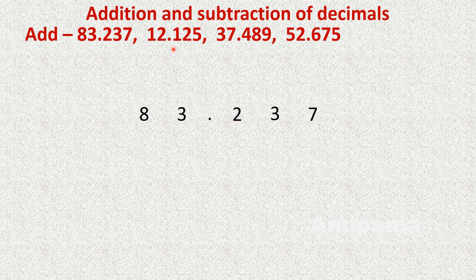We will write each decimal number according to its places. Whole number parts should be aligned under ones, tens, and hundreds. Then the decimal point, followed by the decimal part aligned under tenths, hundredths, and thousandths.